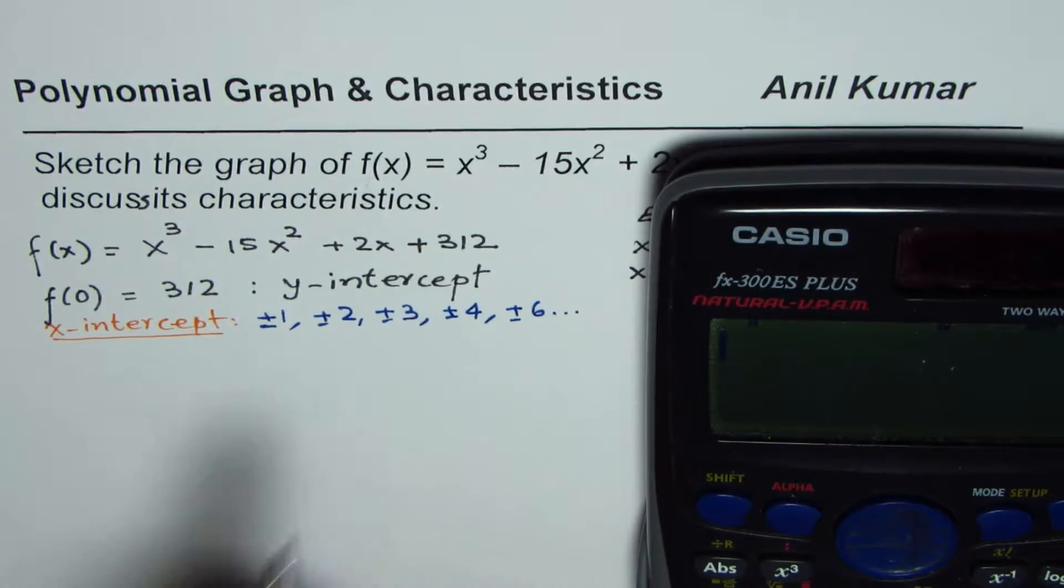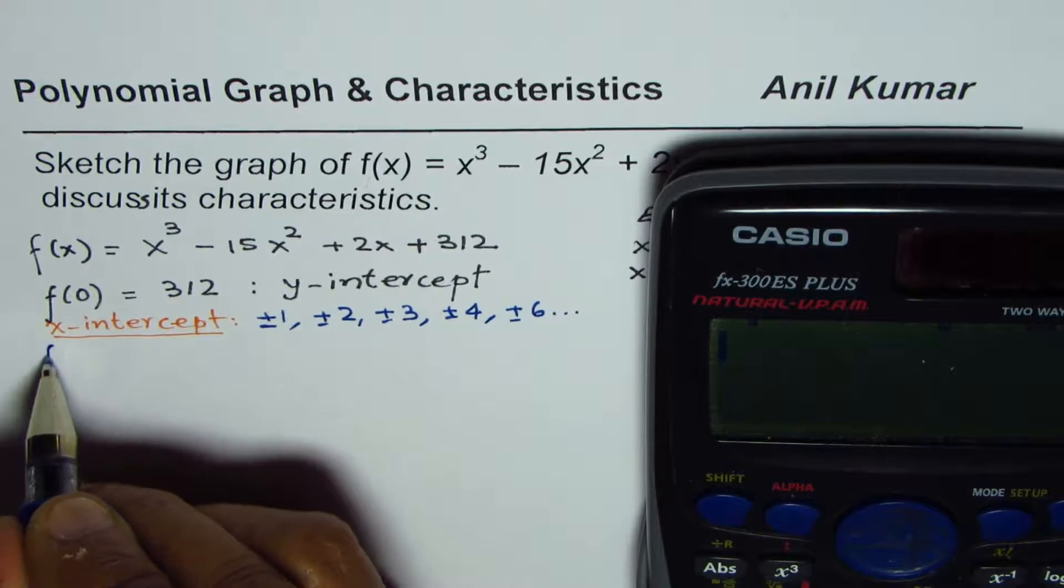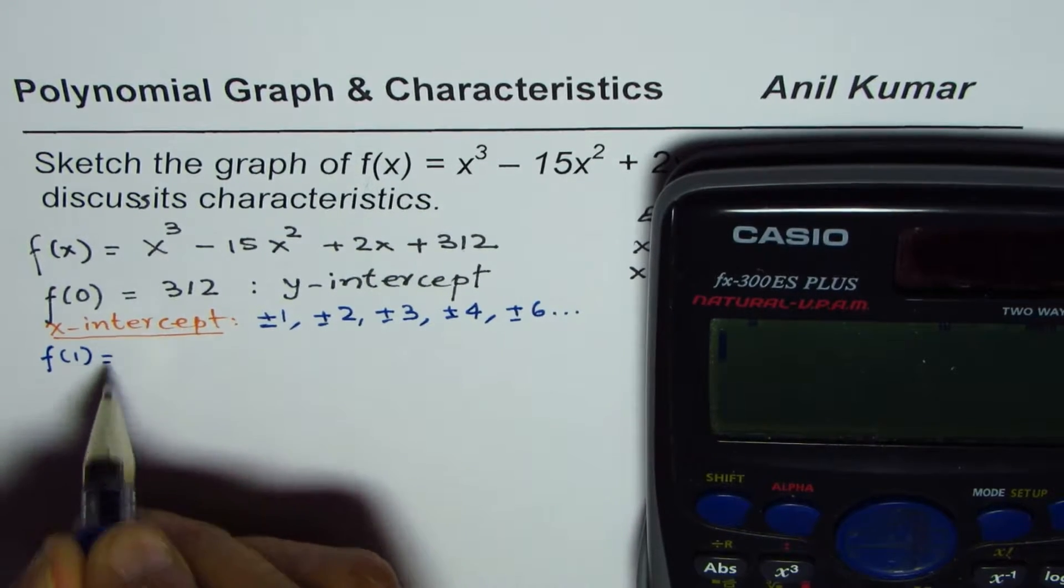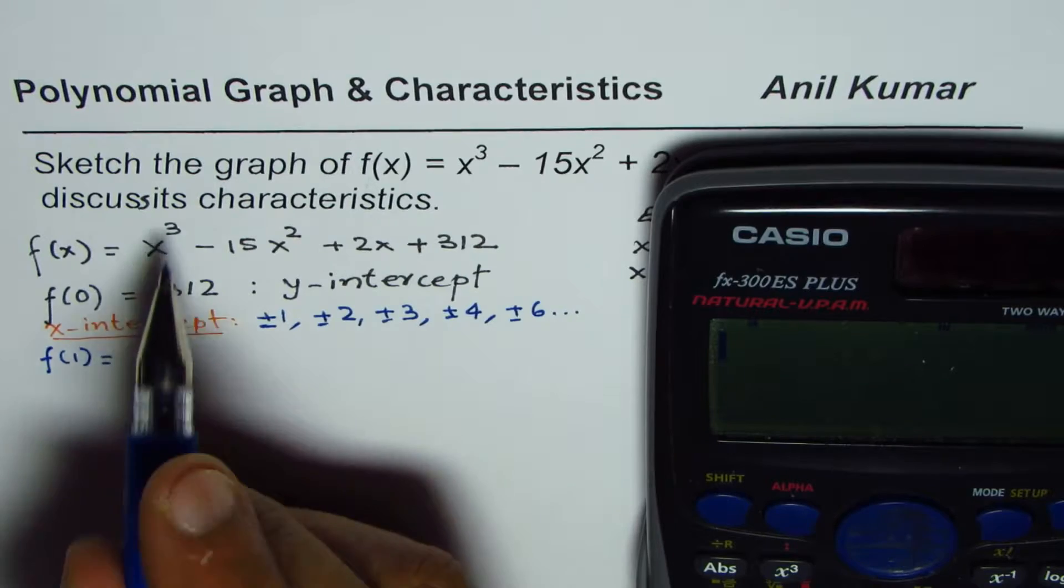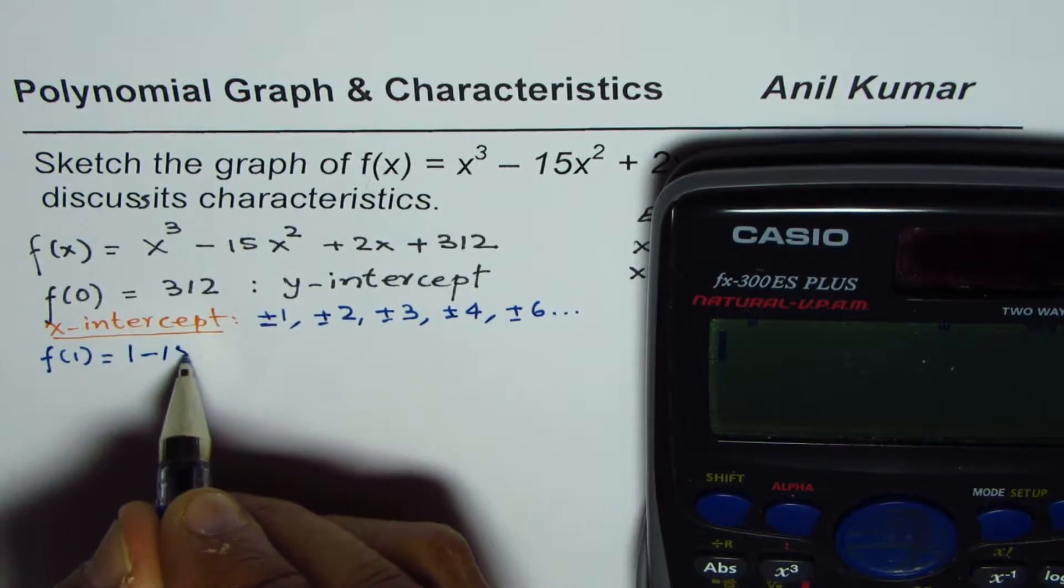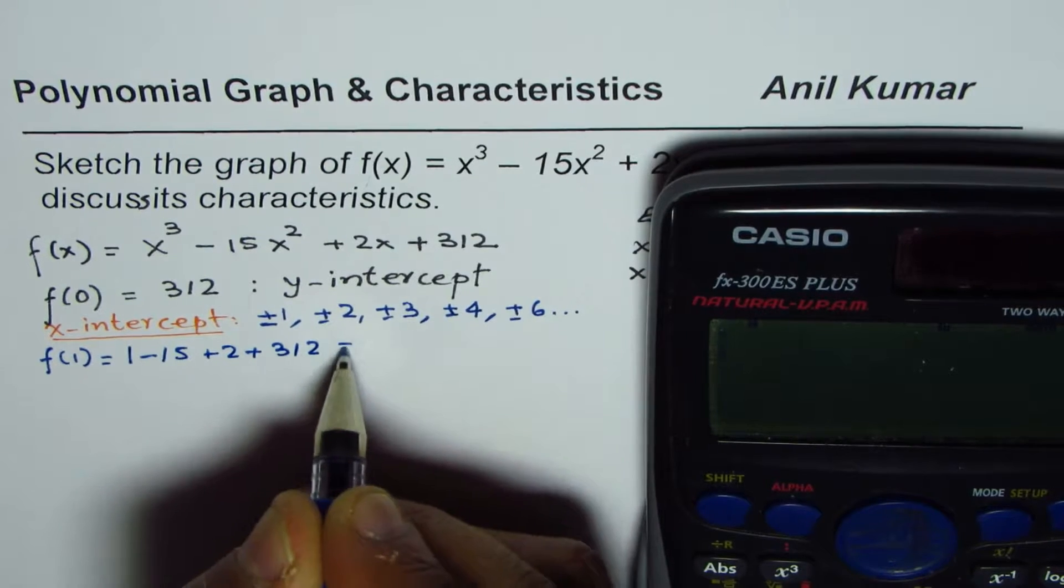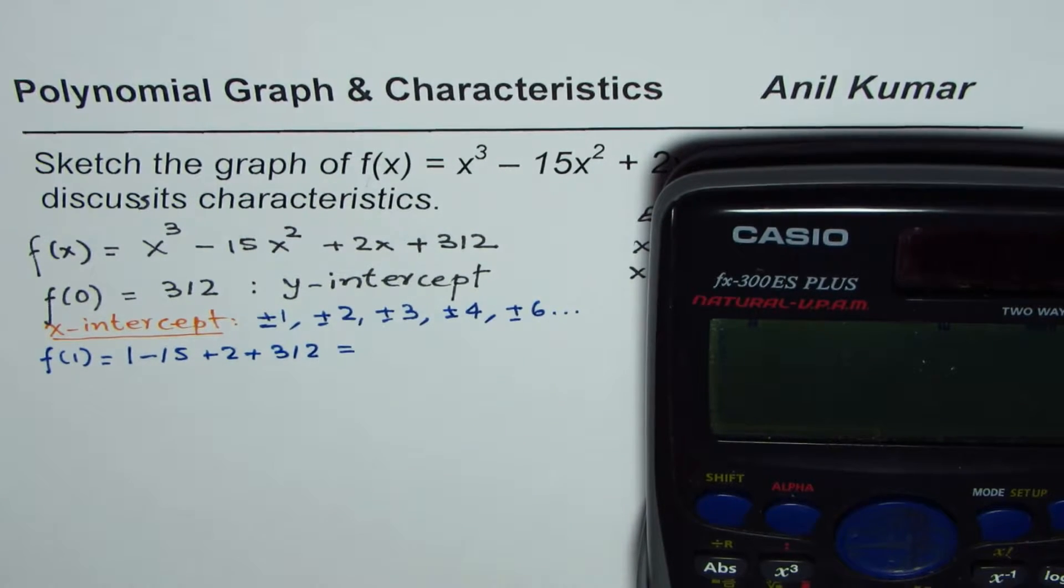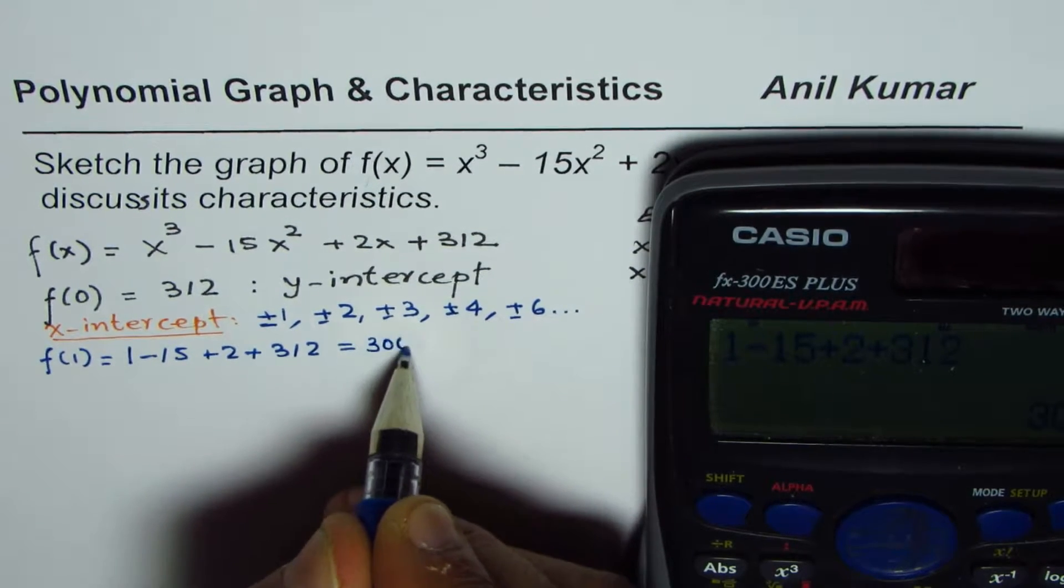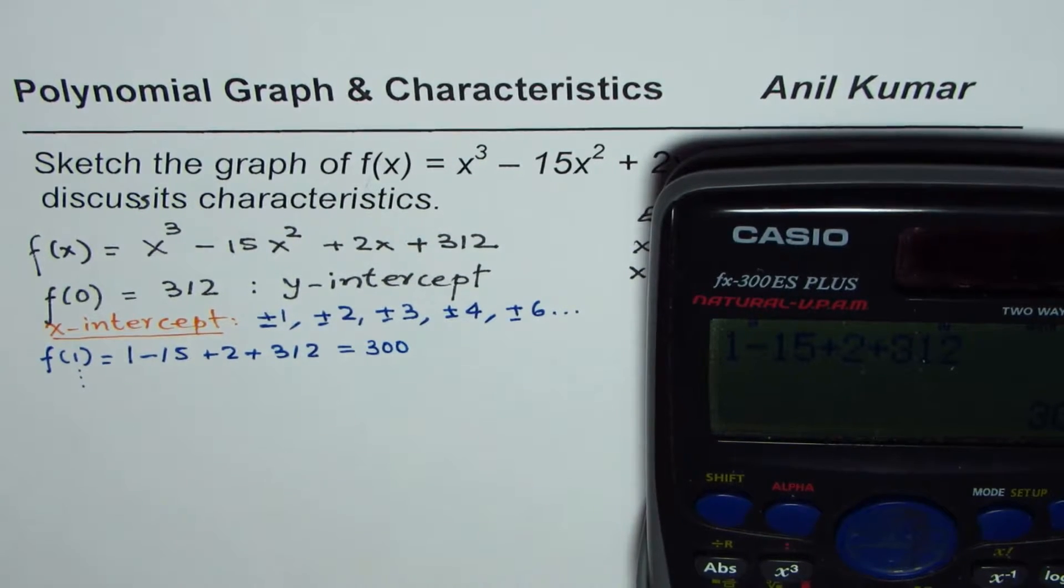So I did this exercise. So when I substitute it, for example, f(1). So if I write 1 here, I get 1³ is 1 - 15 + 2 + 312. So that gives you 1 - 15 + 2 + 312. Clearly it is not zero. It is around 300. So likewise, you try the values one by one.